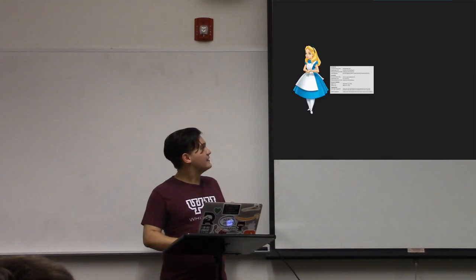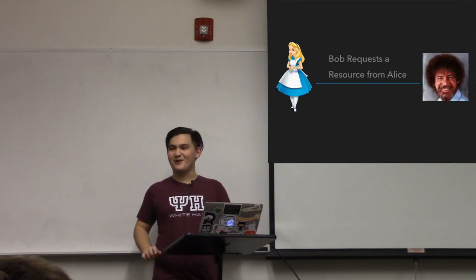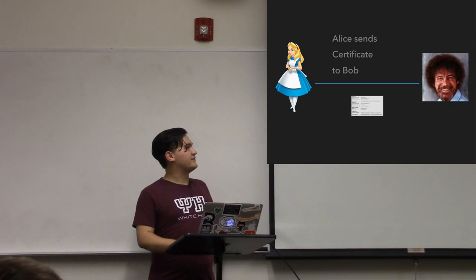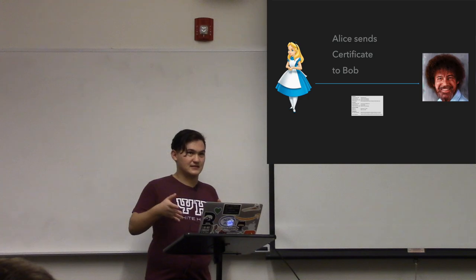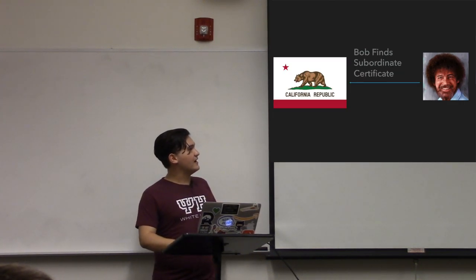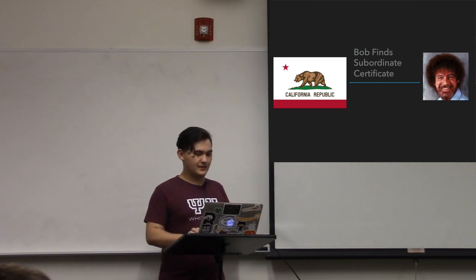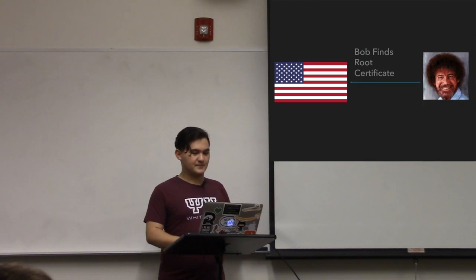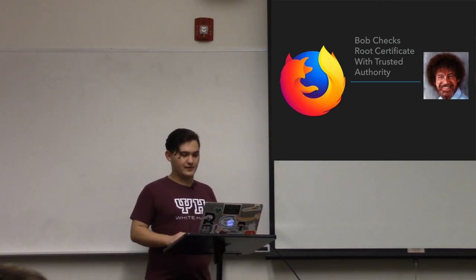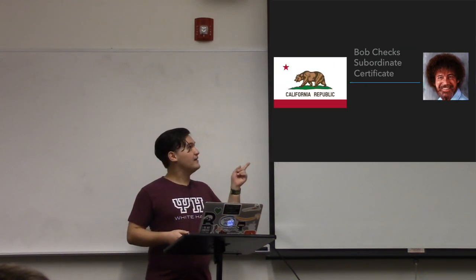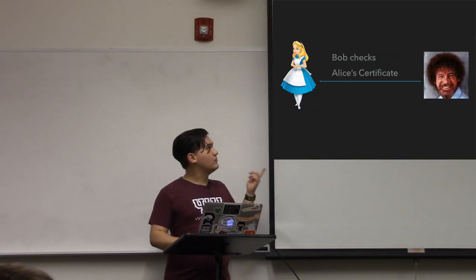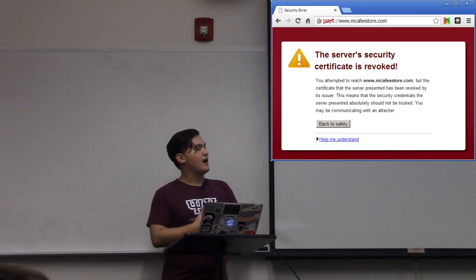So now Alice has her certificate and some time passes, and now Bob decides he wants to visit Alice's website. Bob makes a request and Alice sends the certificate back. But now Bob has to actually validate that yes, this is actually a real certificate and that it is valid. So Bob will look up the subordinate certificate, which will be listed in Alice's certificate. Once he finds the subordinate certificate, he will look up what the root certificate is. He will then go to whatever trust store he's using and hopefully find that certificate there. After he's done that, he will use the root certificate to validate the subordinate certificate, and then validate Alice's certificate the same way.